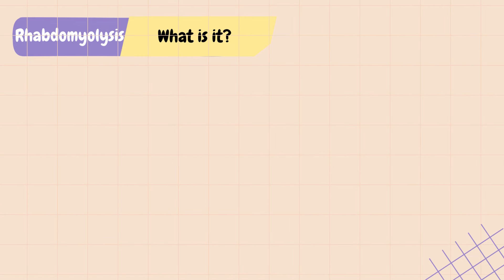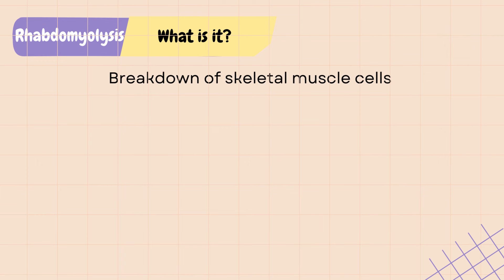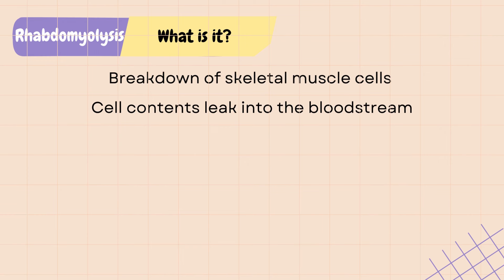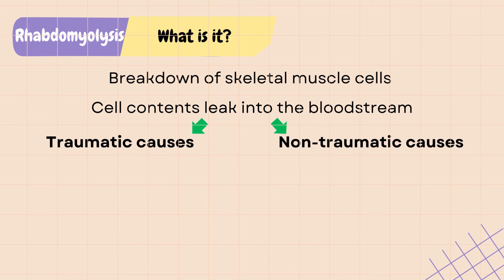Rhabdomyolysis, also referred to as rhabdo, is the breakdown of skeletal muscle cells and leaking of cell contents into the bloodstream. Muscle cells die or break down due to traumatic and non-traumatic causes.